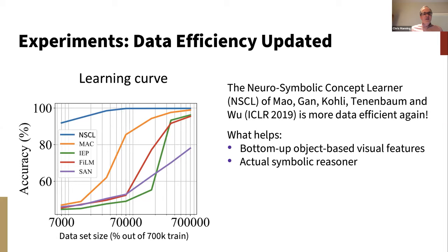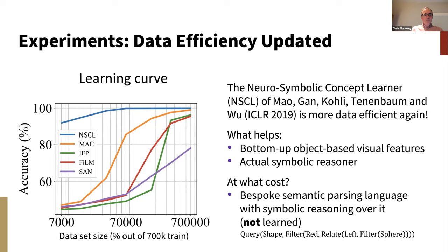What helps the neural symbolic concept learners? They use bottom-up object-based visual features, which has been explored in VQA following the work of Peter Anderson and others — effectively using object recognizers pre-trained to recognize things like spheres, cylinders, and cubes. Then the work is done on top of knowing what objects are in the scene. Secondly, NSCL actually has a provided hand-built symbolic reasoner that can do reasoning over functional programs. Although it's not given the symbolic programs to learn from and has to derive them itself by doing semantic parsing following the work of Luke Zettlemoyer, Percy Liang, and others, the custom semantic parsing language and the ability for symbolic reasoning has been given and is not learned.